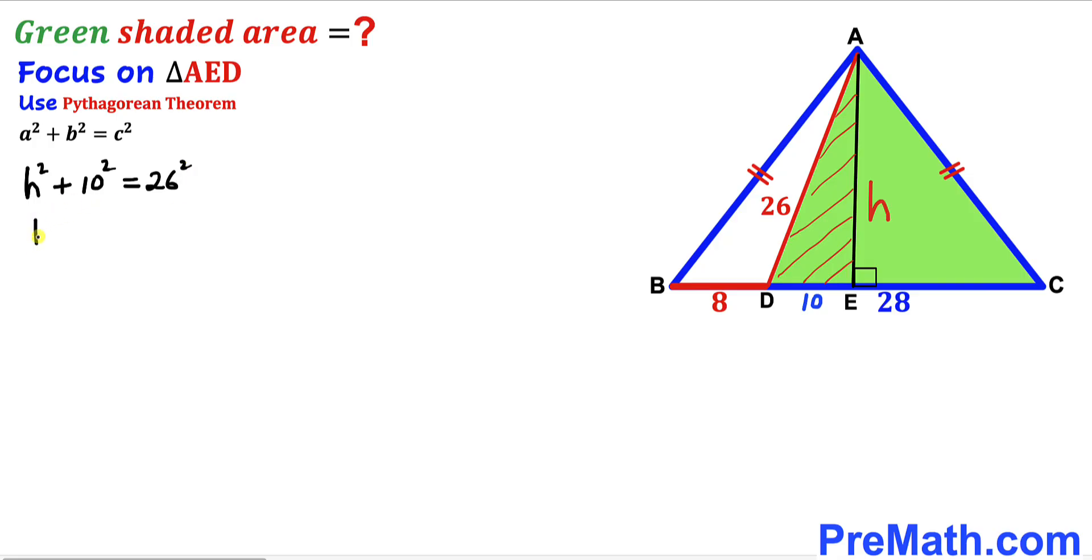Let's simplify: h² + 100 = 676. Subtracting 100 from both sides gives h² = 576. Taking the square root on both sides, our height h equals 24 units.